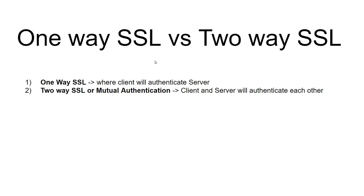We have two things: one-way SSL and two-way SSL. What is the difference between these two? One-way SSL is where the client authenticates the server. Two-way SSL is where client and server authenticate each other. This is the difference between one-way SSL and two-way SSL. Two-way SSL is also called mutual authentication, because client and server authenticate each other.